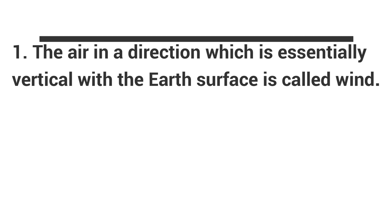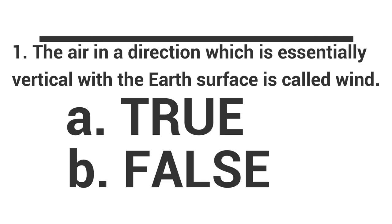Number 1: The air moving in a direction which is essentially vertical with the Earth's surface is called wind. A. True. B. False.